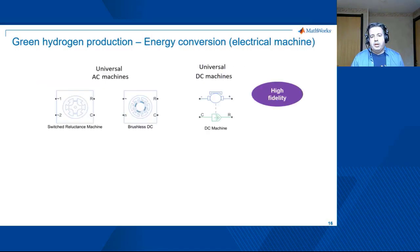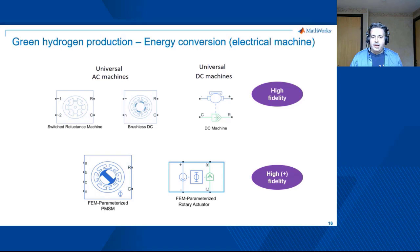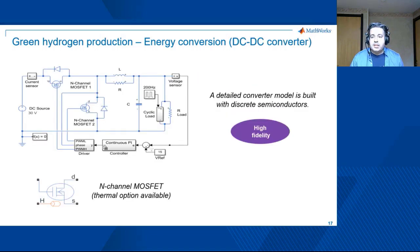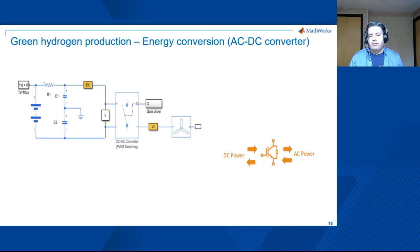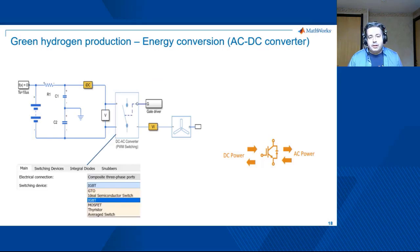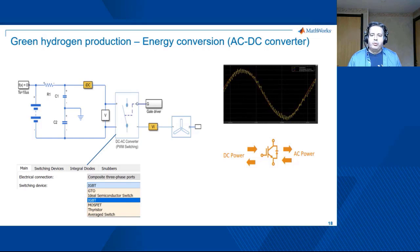Zooming in on energy conversion, Simscape Electrical provides a phenomenal library with universal machine models that make the modeling process intuitive and quick. If you want to reuse electromagnetic design data, you can do so with the two blocks shown on the bottom of the screen. A detailed DC-DC converter can be assembled from discrete elements like diodes, MOSFETs, or IGBTs that can even have a thermal option. A similar approach applies to AC-to-DC converters, where you can use a pre-built component or compose your own with discrete elements. In the end, you will be able to capture high-frequency phenomena due to pulse width modulation in the converter.